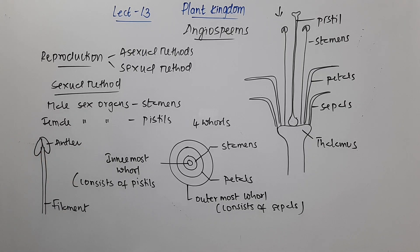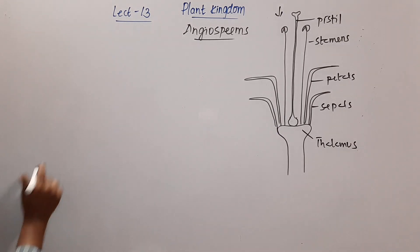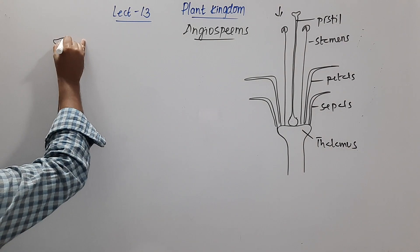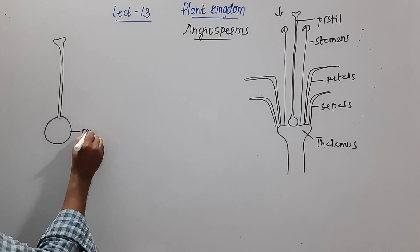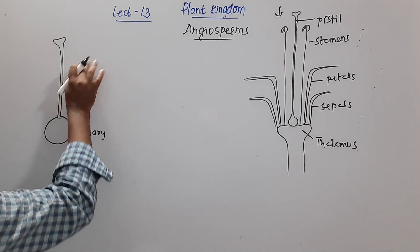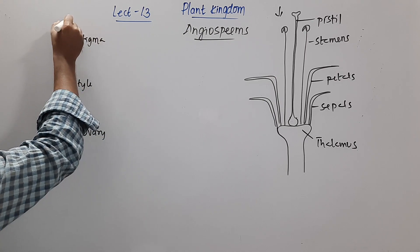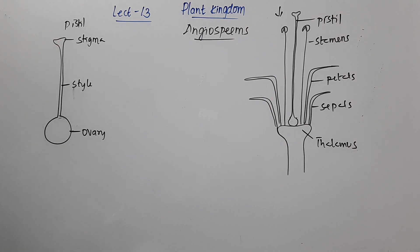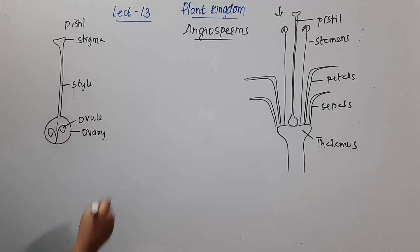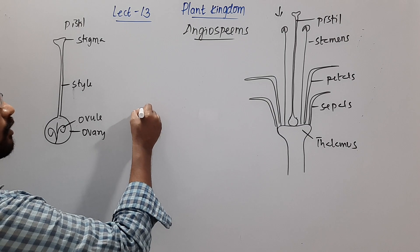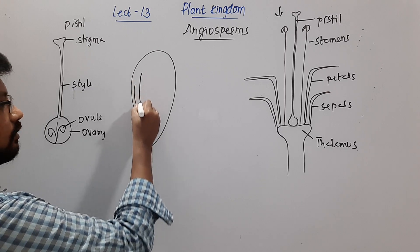The pistil has three parts: the base is swollen and is called the ovary; above that is the style; and at the top is the stigma. Inside the ovary we find the presence of ovules.